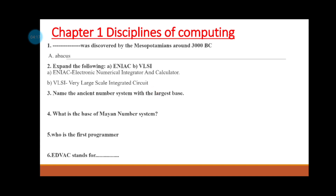We will discuss short forms and abbreviations. Name the ancient number systems. The largest base number system is the Babylonian number system, which has the largest base.